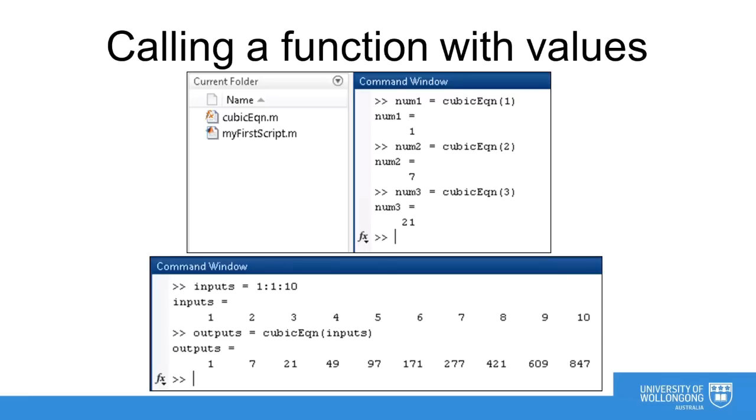In fact, by choosing to use the array version of the power operator inside our function, we can also apply our function to each element of an array. Here is an example of an array called inputs, which is initialized as a 10 element vector with the numbers from 1 to 10. By using our function on this array, we are able to obtain an output array where each element is the output of our function from the corresponding input.